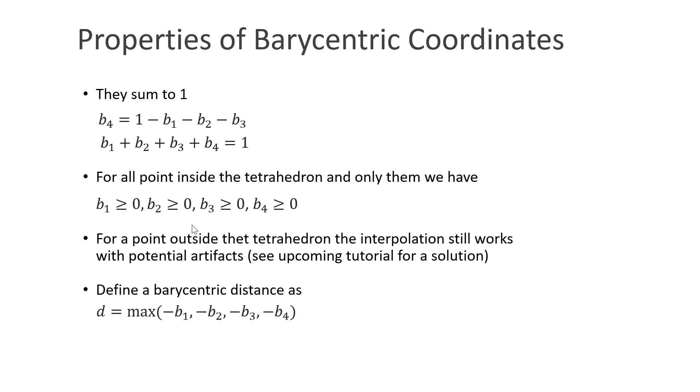We can also define a barycentric distance of a point to a tetrahedron. I define it as the maximum value of the negative barycentric coordinates. As you can see, the distance is negative if the point is inside the tetrahedron and positive if it's outside. If a vertex is not contained in any tetrahedron, we attach it to the tetrahedron with the smallest distance.